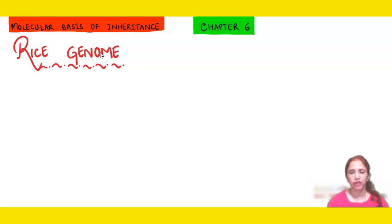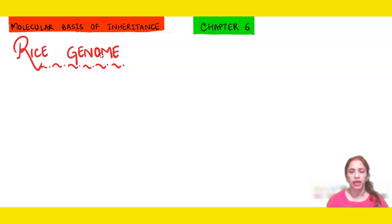Hello everyone, welcome to my channel Online Biology Tutorials. In this video we will study about the rice genome. Just as the human genome was sequenced, similarly the rice genome was also sequenced. There was a need to sequence the rice genome because scientists wanted to study the number of genes present in rice and how these genes interact together, so that manipulation could be done later, since rice is a very important staple crop.